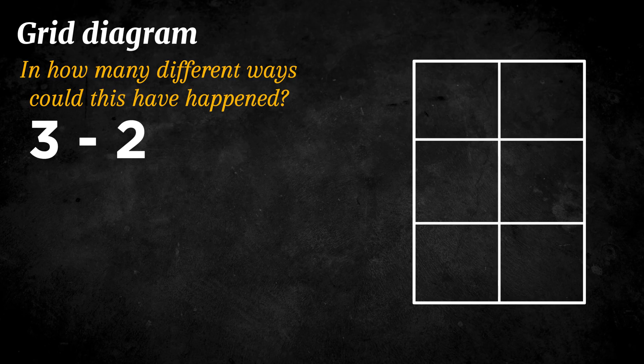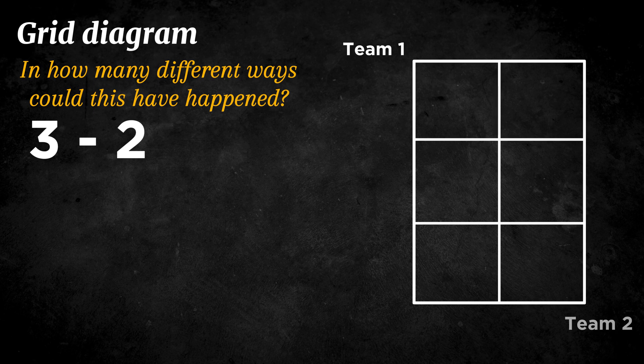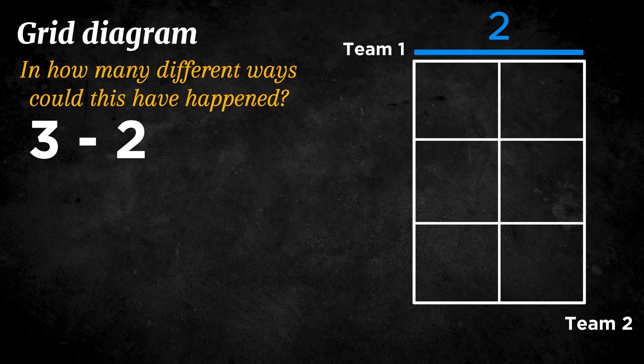Now imagine a grid where the vertical axis represents the goals of Team 1 and the horizontal axis represents the goals of Team 2. Since Team 1 scored 3 goals, the grid will be 3 units tall. Since Team 2 scored 2 goals, the grid will be 2 units wide.